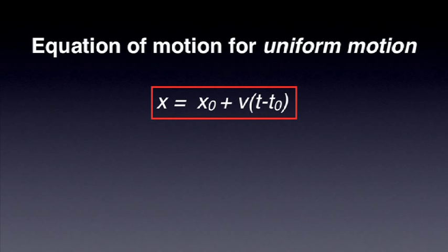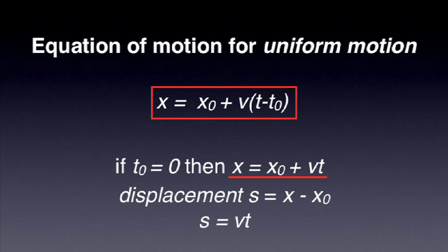There are simplified variations of this formula. When possible, t0 is zero and the formula becomes x equals x0 plus vt. Another way of writing the formula is using displacement. s is the final position x minus the initial position x0 and the formula becomes s equals vt.